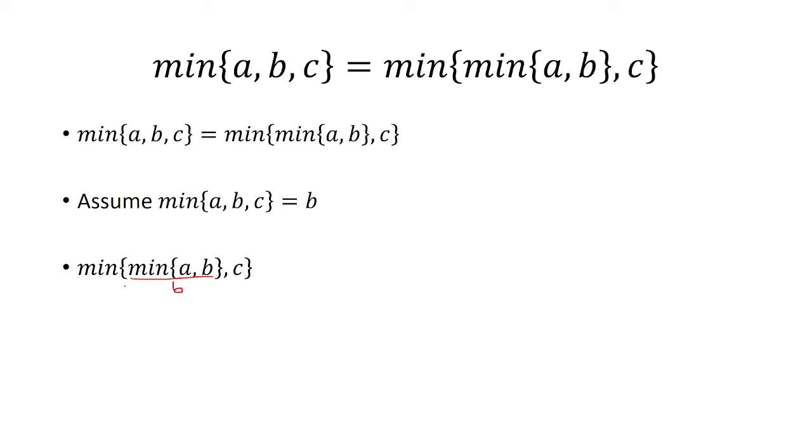So that is b. So you're taking the minimum of b and c, which we said is b. And so b is the minimum of a, b, and c.